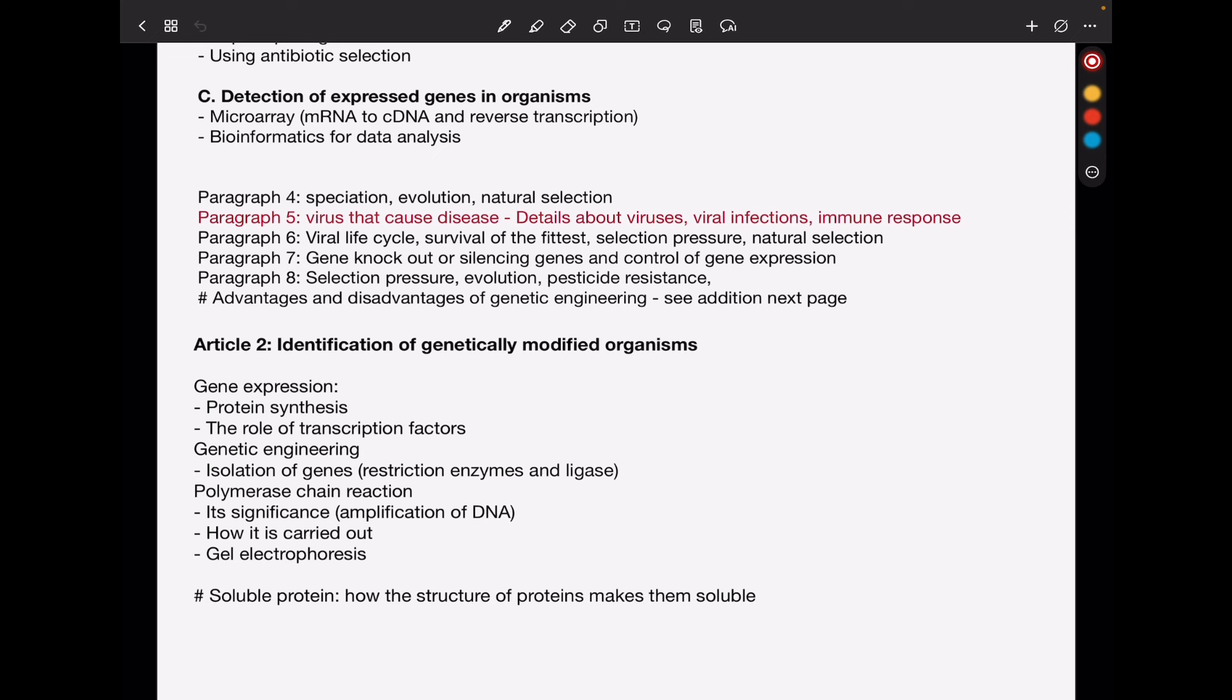Then again, genetic engineering, talking about isolation of genes, using restriction enzymes, ligase, and so on. And this paragraph focuses a lot on polymerase chain reaction, or PCR. So you have to know the significance of PCR. Remember, this is for amplification of DNA. How PCR is carried out. And then I just attach gel electrophoresis, because sometimes from PCR they can go to that. And there was something mentioned about soluble proteins, so they could ask about the structure of proteins that make them soluble. Remember, soluble proteins have R groups that are hydrophilic on the outside, so they can make them to be soluble while the hydrophobic R groups are going to be on the inside when the protein folds into the 3D structure.